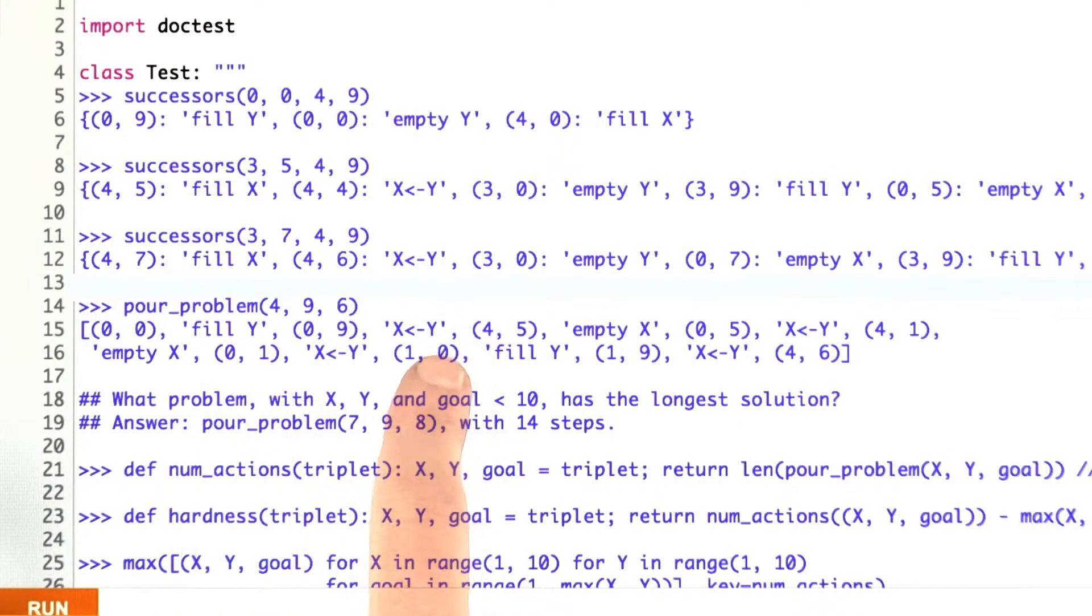Fill y, pour from y into x, empty x, do the same, empty x again, fill y into x again, fill y, and pour from y into x, and then we end up with a 6 in y.